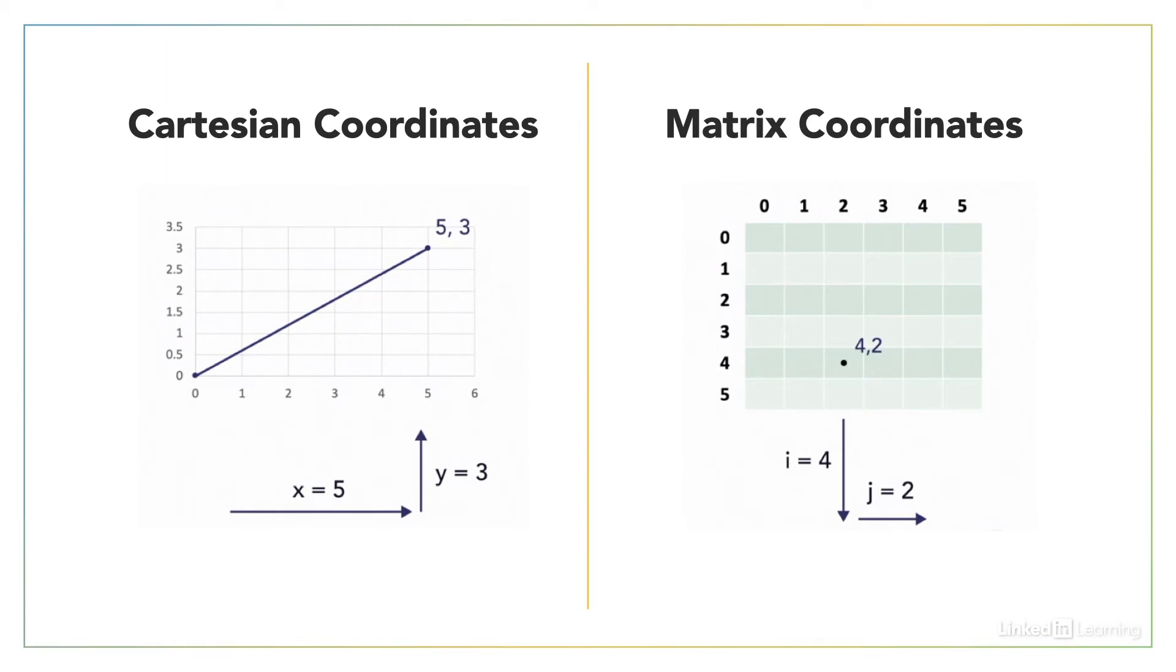Whereas in matrix coordinates, grid coordinates, it's a slightly different system. So first of all we have the vertical coordinate first, and that's because we're basically talking in terms of rows. So the I coordinate is the row number, and you'll notice that it also as it increases it goes down rather than up, because row 1 is further down our grid than row 0.